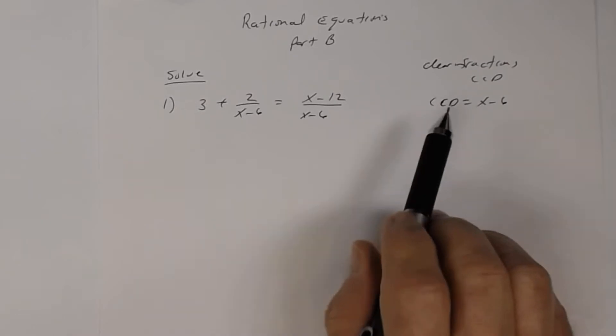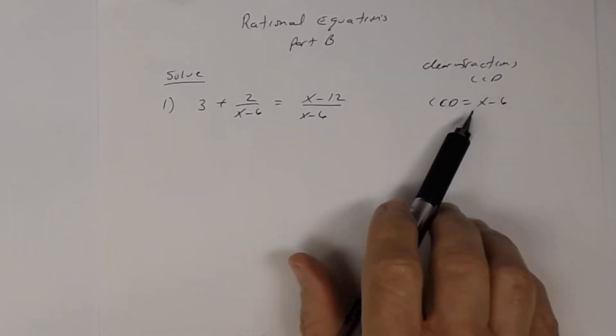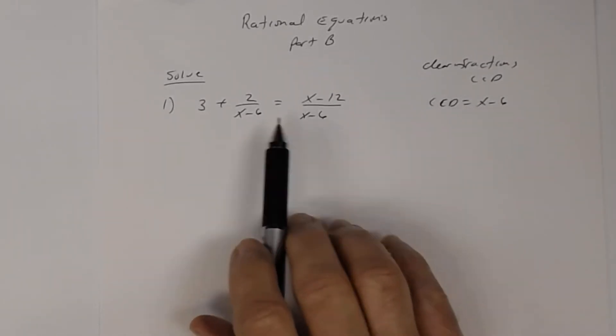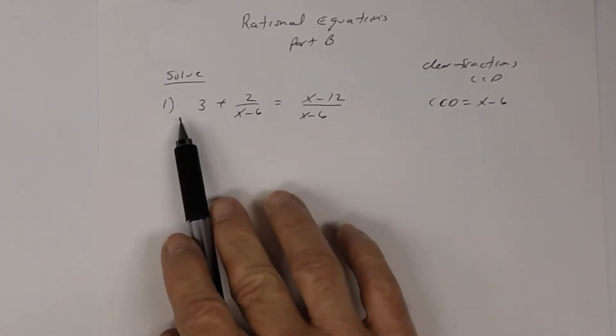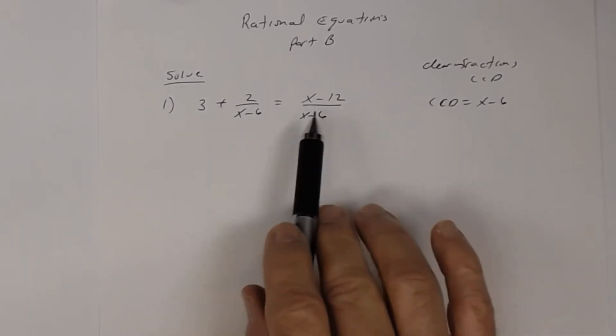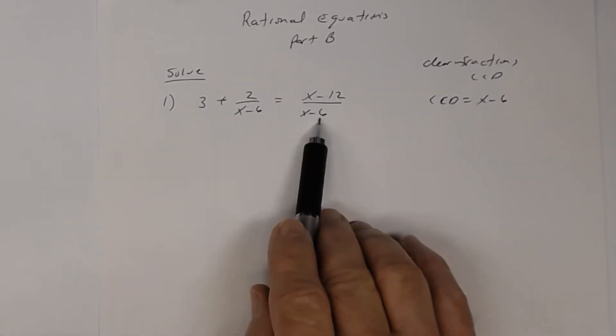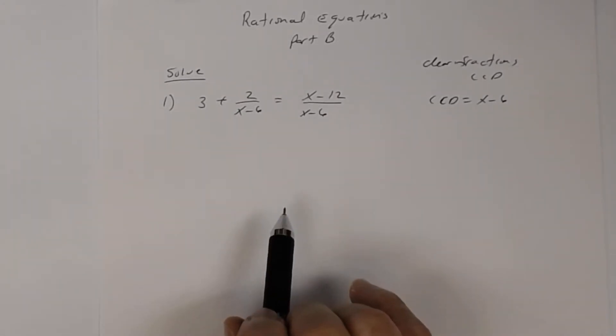Remember, the whole point of finding the LCD is to get these denominators to be 1s. So you want a 1 here and a 1 here in the denominator.